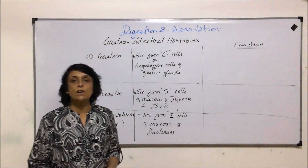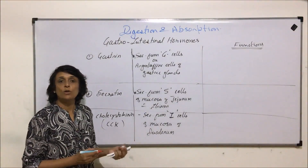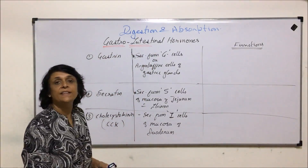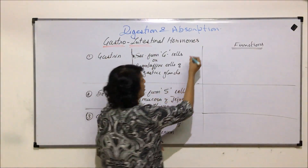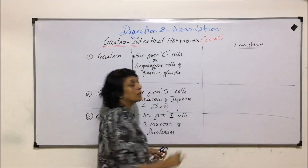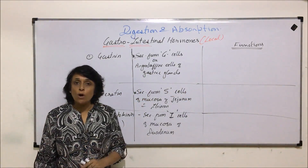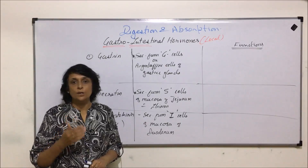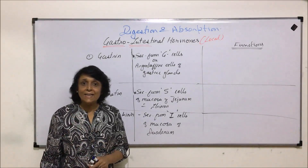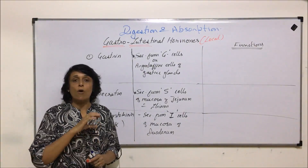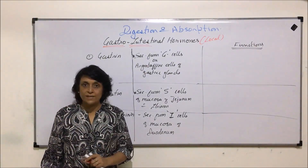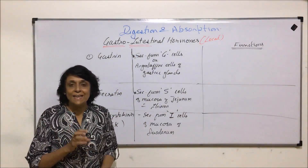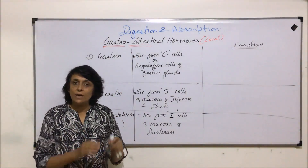In this section we'll be discussing certain local hormones. These local hormones are secreted in the stomach and intestine, and that is why they are known as gastrointestinal hormones. Normally when we use the term hormones, we think of endocrine glands which secrete their secretions into the blood and those hormones work on distant organs. In this case, these hormones are released by a particular area or cell and they work in the same area for a specific function.